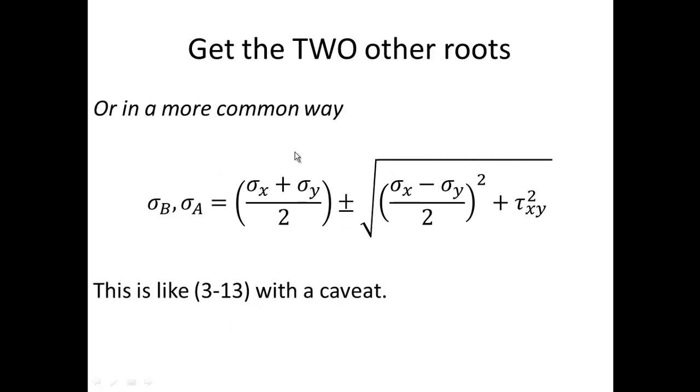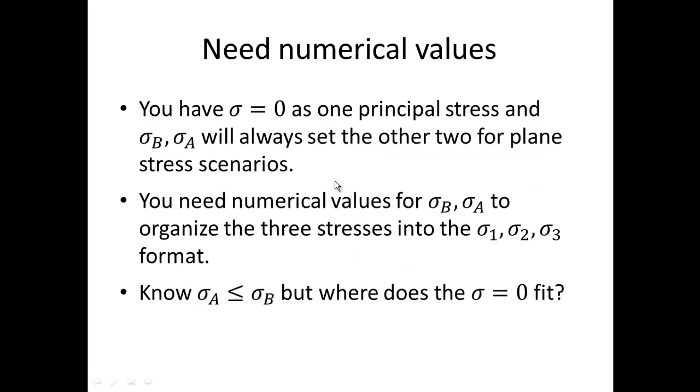Then we could write it in a more common way, where you have sigma b comma sigma a, with the understanding that b is going to take the positive of the radical and a is going to take the negative of the radical. This is like equation 3.13 with a caveat, because we can't say that this is sigma 1, 2, because remember, we have that sigma equals zero as one principal stress and sigma a and b as the other two.